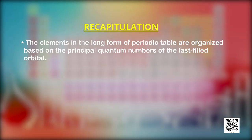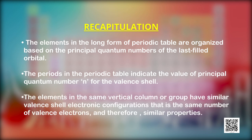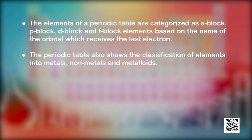From our discussion, we conclude that elements in the long form of the periodic table are organized based on the principal quantum numbers of the last filled orbital. The periods indicate the value of principal quantum number N for the valence shell. Elements in the same vertical column or group have similar valence shell electronic configurations — the same number of valence electrons — and therefore similar properties. The elements of the periodic table are categorized as S-block, P-block, D-block, and F-block elements, and also classified as metals, nonmetals, and metalloids.